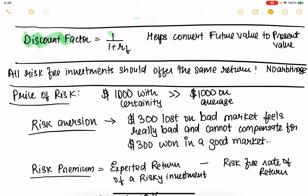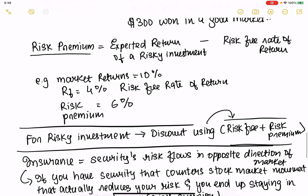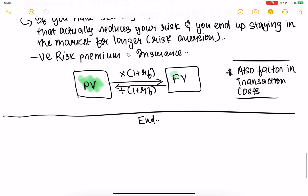The discount factor is 1 / (1 + RF), where RF is the risk-free rate of return. It helps us convert future value to present value. To convert present value to future value, multiply by (1 + RF) — for example, at 4% risk-free return, multiply by 1.04. To convert from future value to present value, divide by (1 + RF). This lets you express everything in the same currency, either present value or future value.